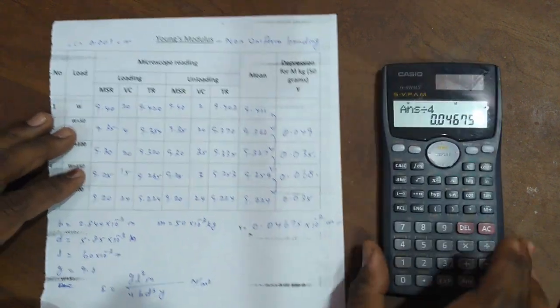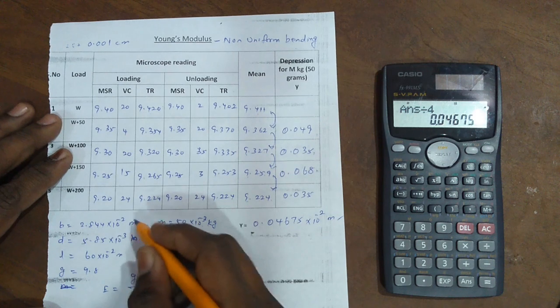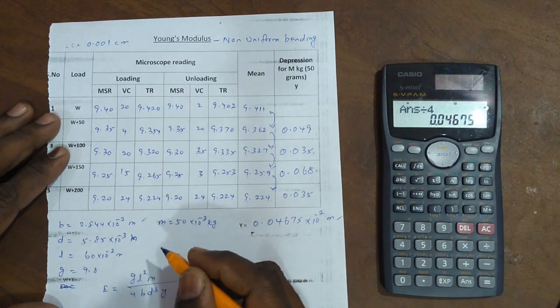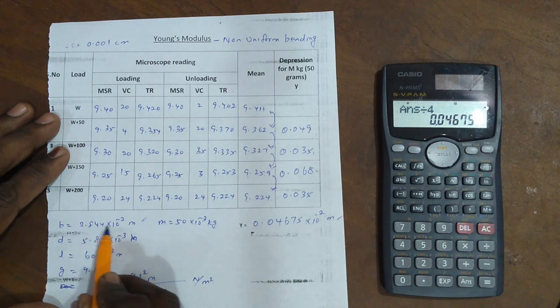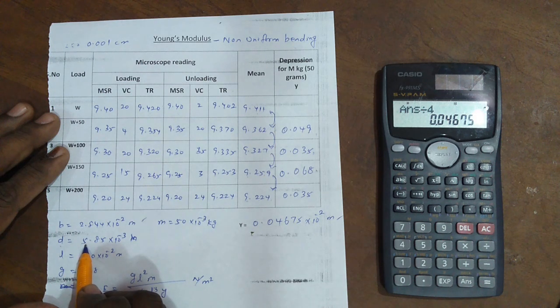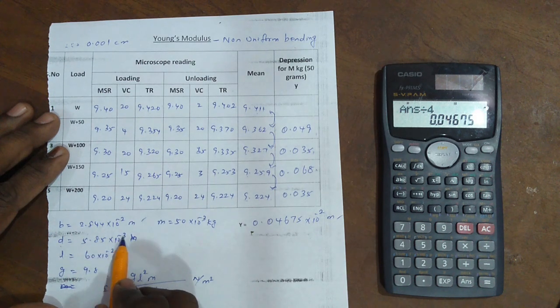You already calculated the breadth of the bar using vernier calipers. The answer is 2.844 centimeters. And thickness of the bar using screw gauge: the output answer is 5.85 to the power minus 3 meters.